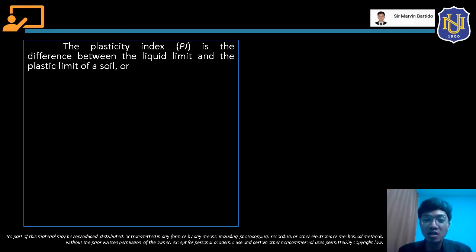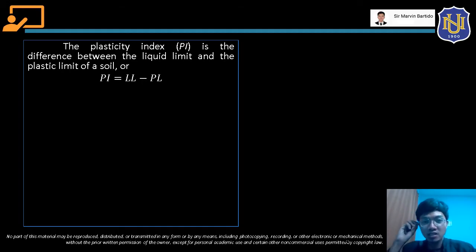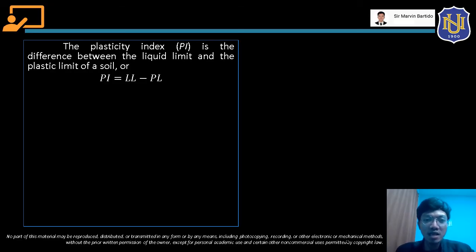From the liquid limit and plastic limit, we can induce an index — what we call the plasticity index. The plasticity index is the difference between the liquid limit and the plastic limit of a soil. The formula is PI = LL minus PL, where LL is the liquid limit and PL is the plastic limit.